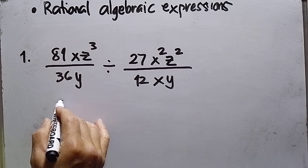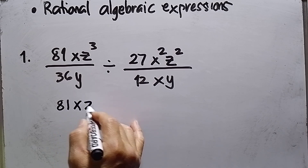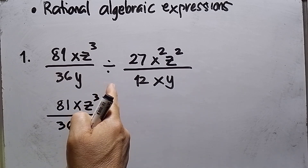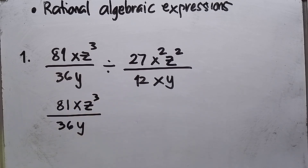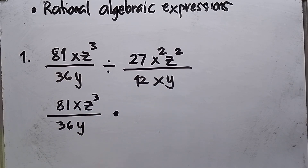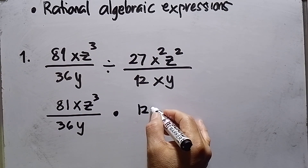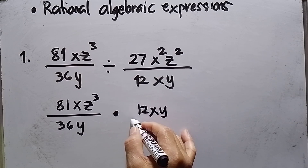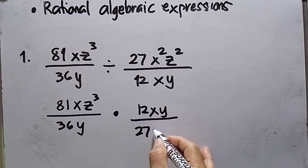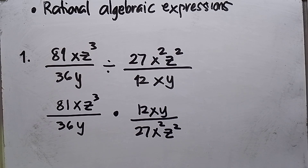I need to write the first fraction: 81xz³ over 36y. Take note — for division of fractions, this operation will be changed to multiplication and then the second fraction is flipped upside down. So the new numerator will be 12xy and the new denominator will be 27x²z².